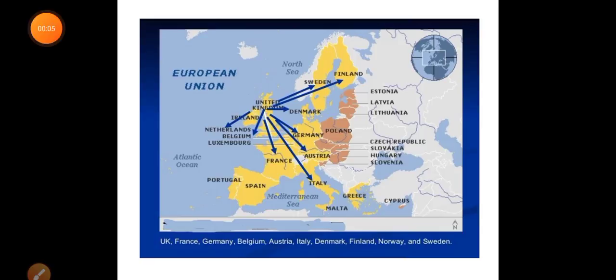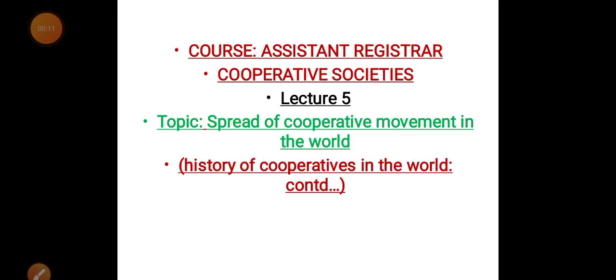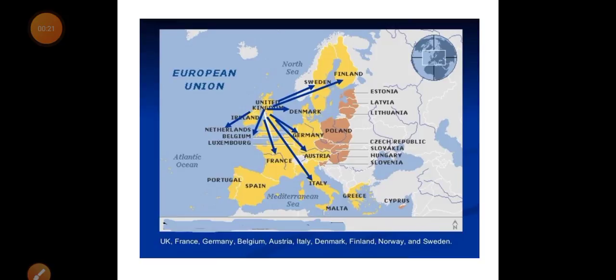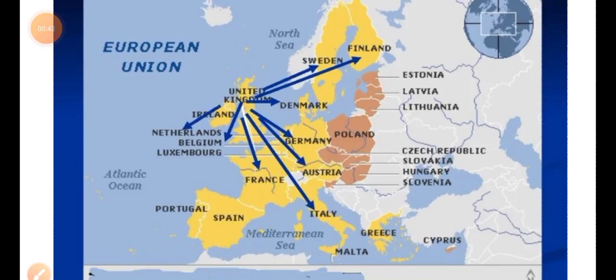Welcome dear students. Today is the fifth lecture of the lecture series on Assistant Registrar Cooperative Societies. Today's topic is the spread of the cooperative movement in the world, continuing from the previous topic on the history of cooperatives. We have already covered prominent societies such as the Rochdale Pioneers and the Hermann Schulze model, which created credit unions. Today we will see how the cooperative movement spread and how its momentum gained.